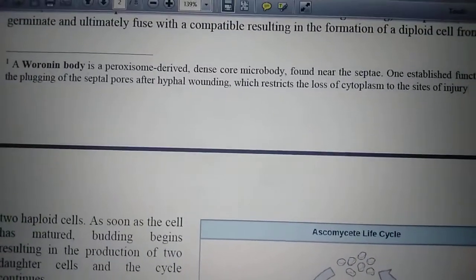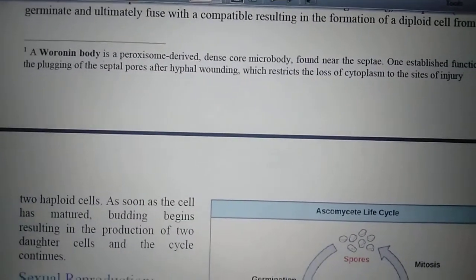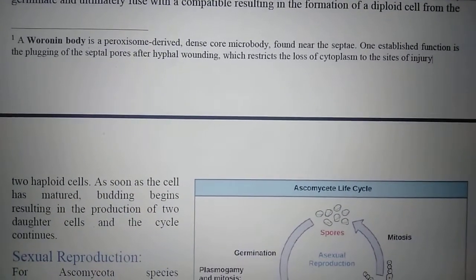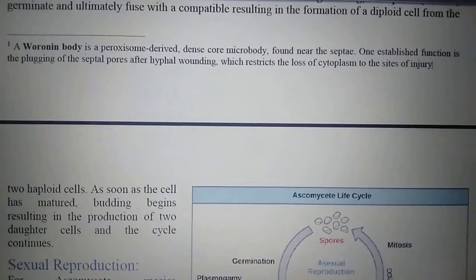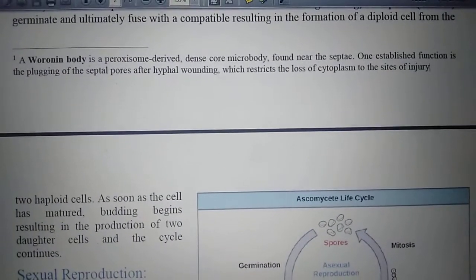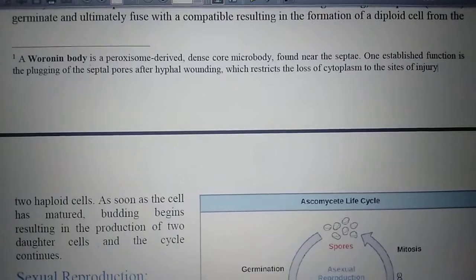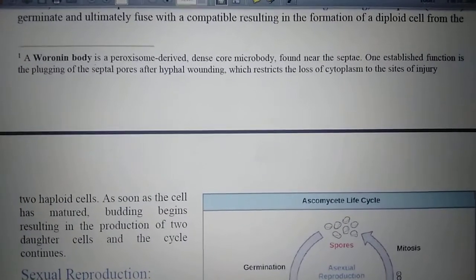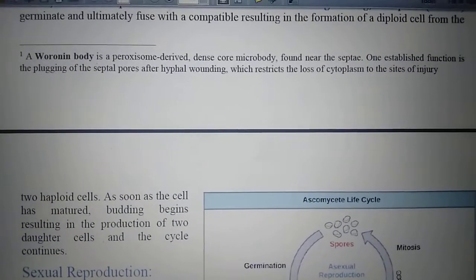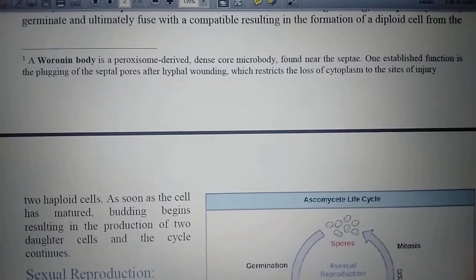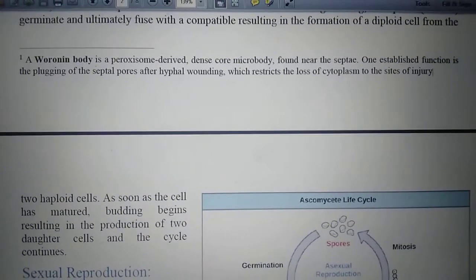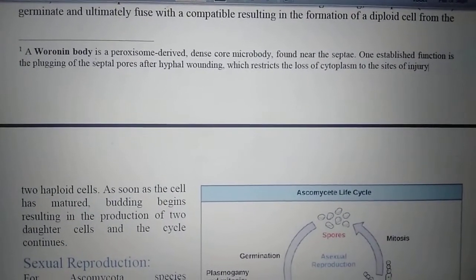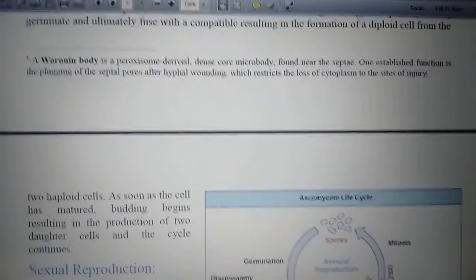Woronin bodies are actually peroxisome-derived dense core microbodies. They are found near the septum. One established function is the plugging of the septal pores after hyphal wounding. So when the hyphae of Ascomycetes has a wound or damage, the Woronin bodies plug and close the septal pores so that the cytoplasm will not be lost at the injury site.